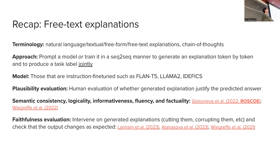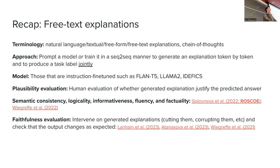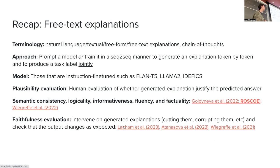We don't have a great metric that gives us a binary faithful or not faithful score. What we can do is produce tests that are necessary conditions for a faithful explanation to meet. Meeting these conditions doesn't yet mean our explanations are faithful — it just means they are not 'not faithful.' What we do is intervene on generated explanations: we cut them, corrupt them, and check that the output changes as expected, as we saw in the paper we read last time.